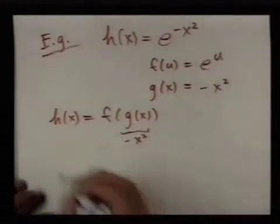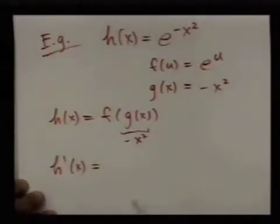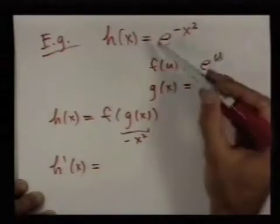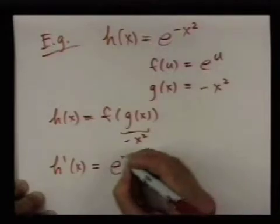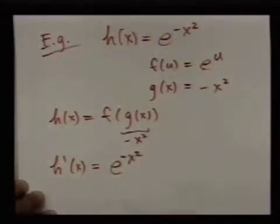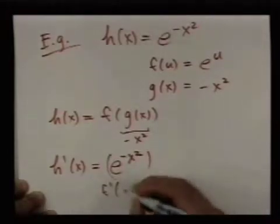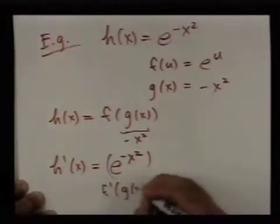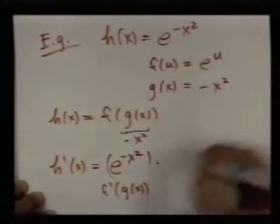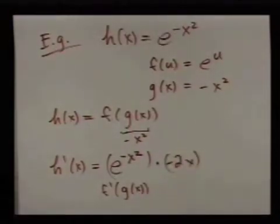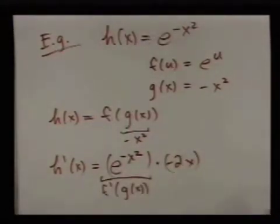As you should already know, the way we compute the derivative of this is we first take the derivative as if we just have the variable u. So we have the derivative of the exponential function with g plugged in. This gives us f prime of g of x plugged in, times g prime, which is negative 2x. That's the chain rule in one variable.